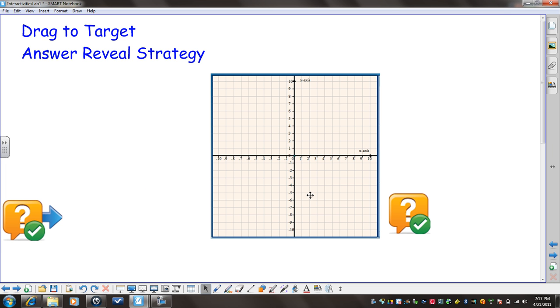You could pose the question to the student, they could come up, grab a marker, and draw what they think the right answer is, and then you could drag the answer key to target and see how close they were.